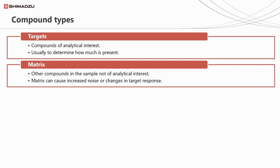We need to be aware of matrix, as it can cause increased noise in our baseline, or even alter a target's response. In environmental analysis, matrix often boosts the response of some pesticides by blocking active sites in the inlet and column, which some pesticides get stuck on.